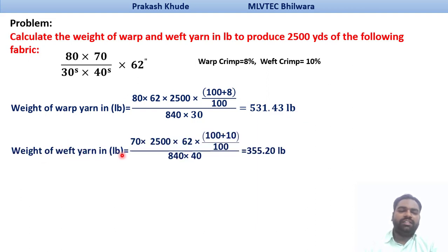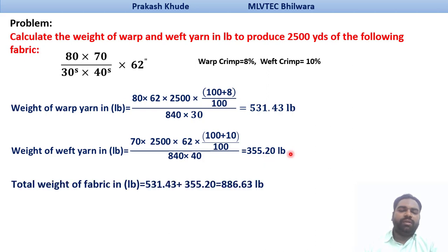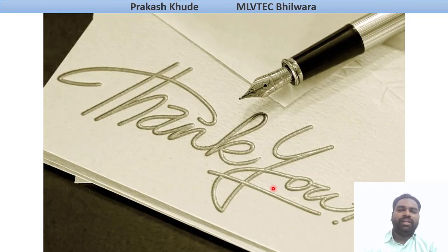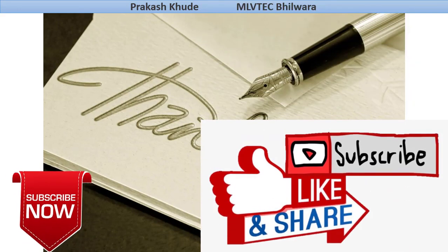Similarly, the weight of weft yarns is calculated as picks per inch 70 multiplied by the length of fabric to get the total number of picks, multiplied by the fabric width, along with the weft crimp percentage to get the total length of weft in yards, divided by 840 into weft count 40. The total weight of weft is 355 pounds. So the total weight of the fabric for 2500 yards comes to 886 pounds. Thank you so much students for your kind attention; stay tuned to my channel, don't forget to subscribe, like, share and comment on this video.